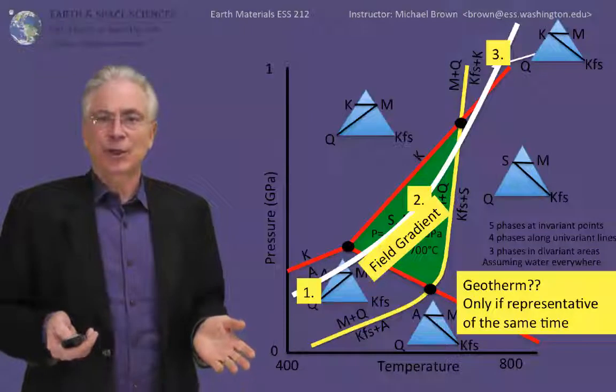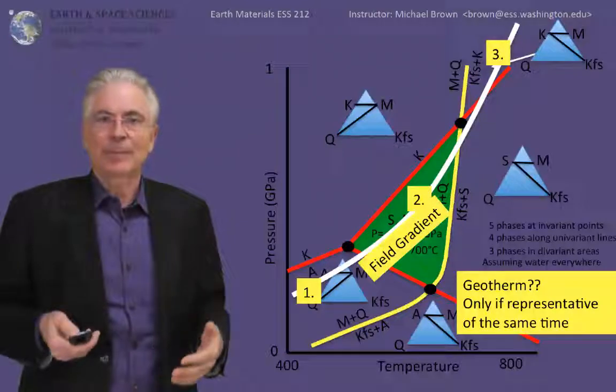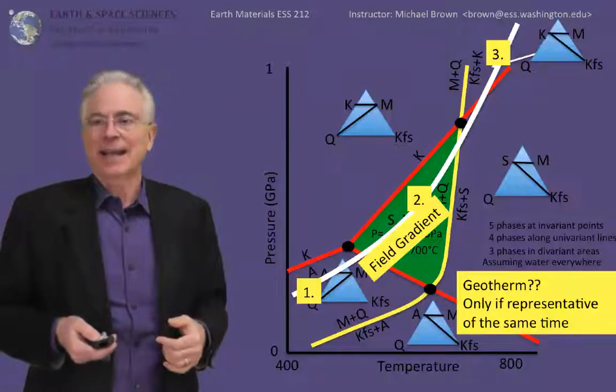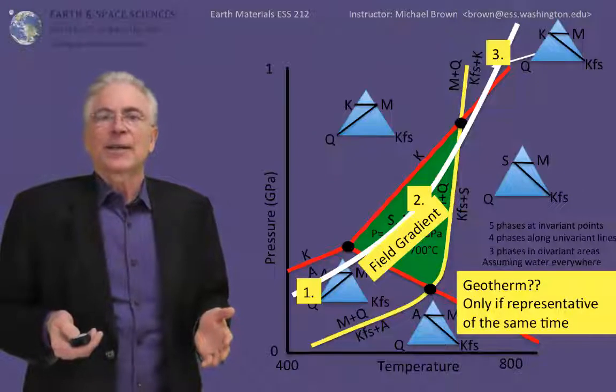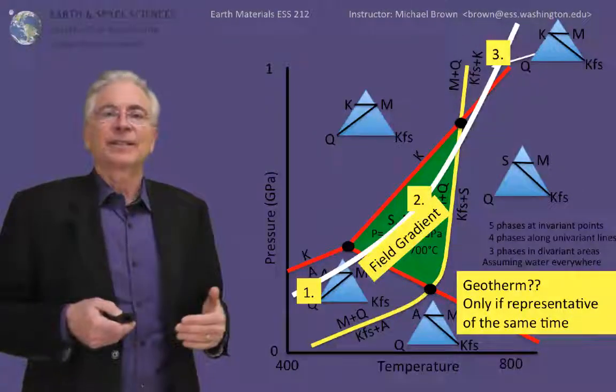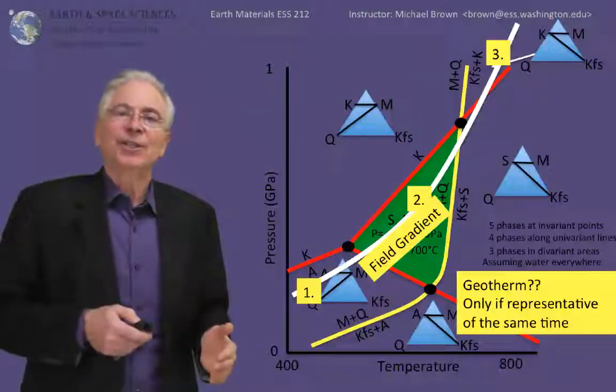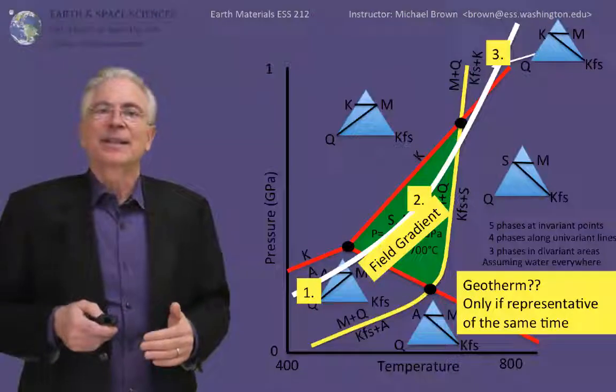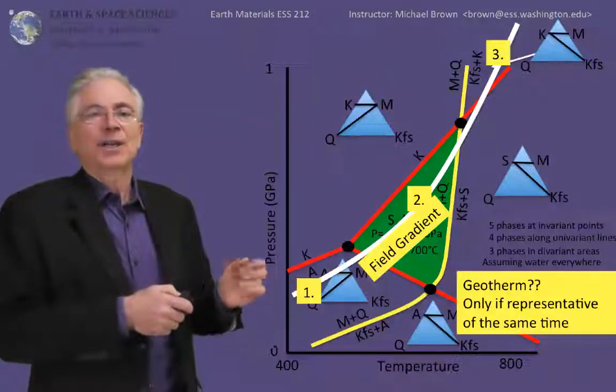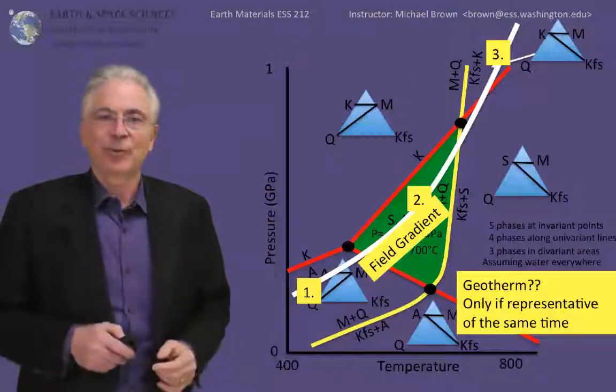Well, the answer is it could if all those rocks obtained their maximum temperature-pressure state at exactly the same time. However, if there was a metamorphic event that transgressed through this area and changed temperatures at different times at different locations, then what you see is not how temperature varied with depth, but how temperature varied with time.